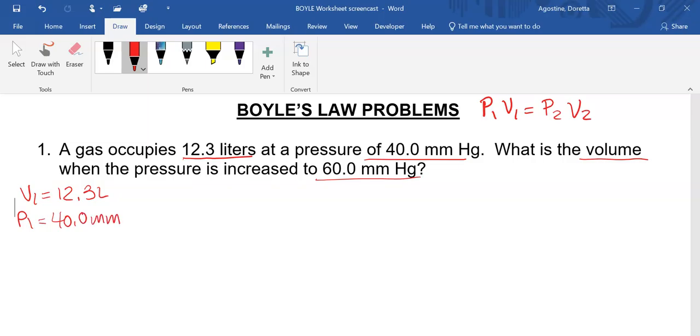What is the volume? So V2 is our question mark if the pressure, P2, is increased to 60.0. So now, P1V1 equals P2V2. So we're going to be solving for V2. So I'm going to rearrange: V2 is equal to P1V1 over our P2.